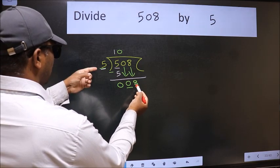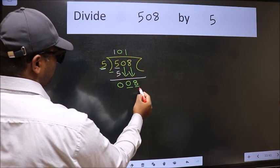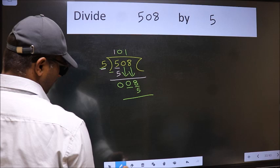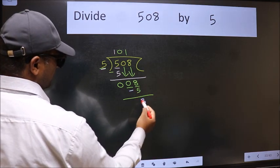A number close to 8 in the 5 table is 5 once 5. Now we should subtract. We get 3.